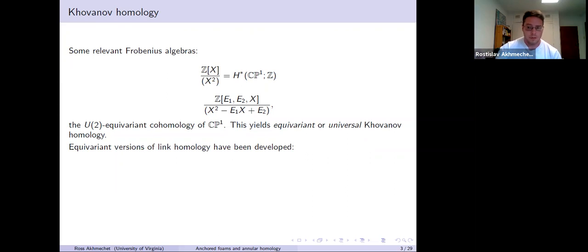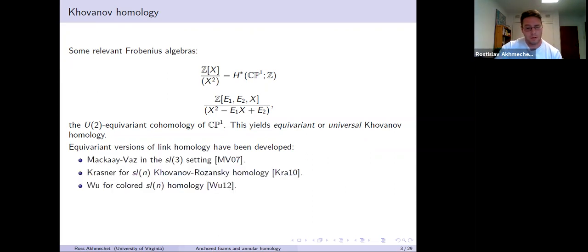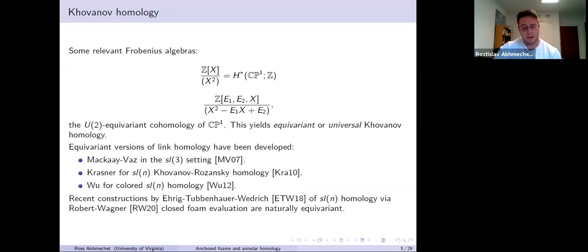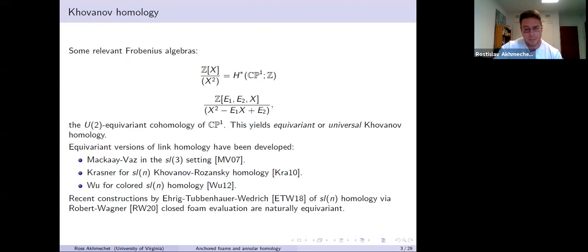Equivariant or universal versions of other link homology theories have also been developed. McKay and Voss did this for SL3 homology. Krasner did this for SLN Khovanov-Rozansky homology, and Wu did this for the colored versions. Really relevant to what I'll be discussing is recent constructions of SLN homology using the Robert-Wagner closed foam evaluation, which are naturally equivariant — there are naturally extra parameters like E1 and E2 built into the theory.